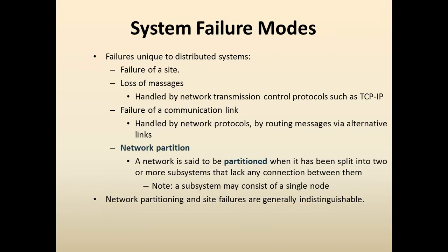System failure modes in a distributed system include: failure of a site, loss of messages handled by network protocols such as TCP/IP, and failure of a communication link handled by routing messages via alternative links. Network partition occurs when the network is split into two or more subsystems that lack any connection between them — a subsystem may consist of a single node. Network partitioning and site failures are generally indistinguishable.